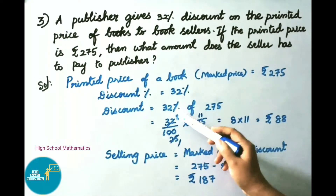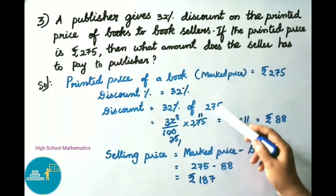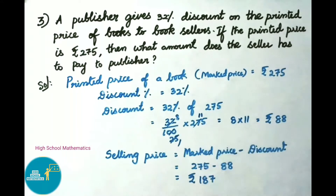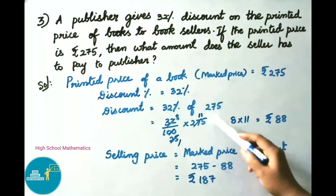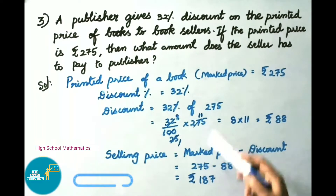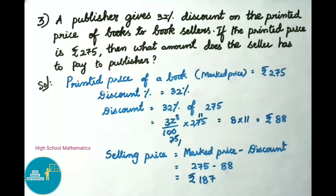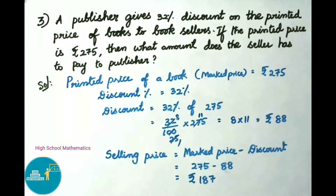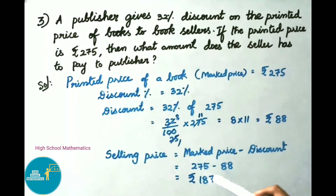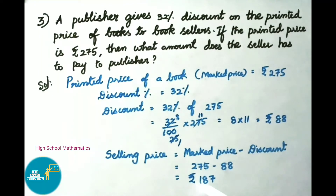Discount equals 32% of 275, that is 32 by 100 into 275. Simplifying: 32 by 4 is 8 and 100 by 4 is 25; then 8 into 11 equals 88 rupees. Therefore, discount on book is 88 rupees. Selling price equals market price minus discount, that is 275 minus 88 equals 187 rupees. Therefore, the seller has to pay 187 rupees to the publisher.